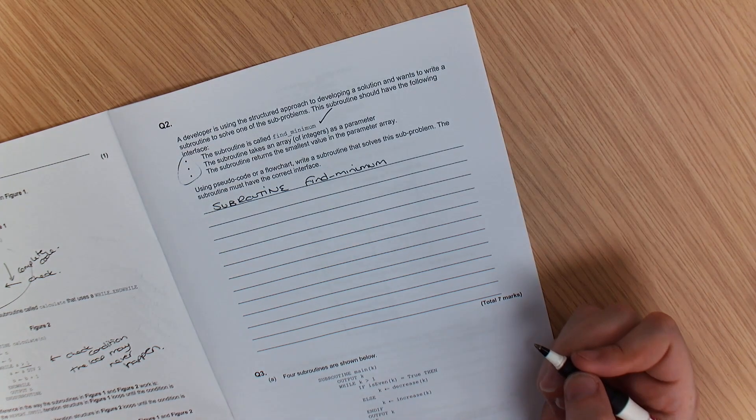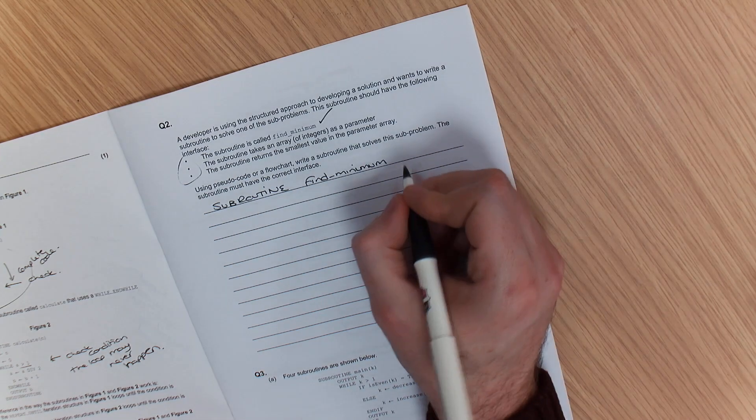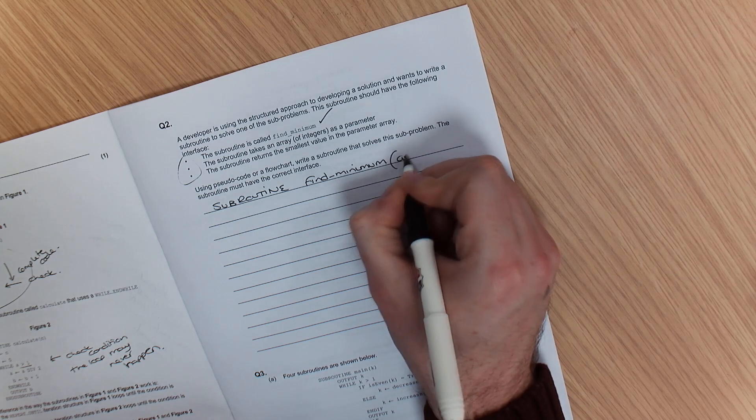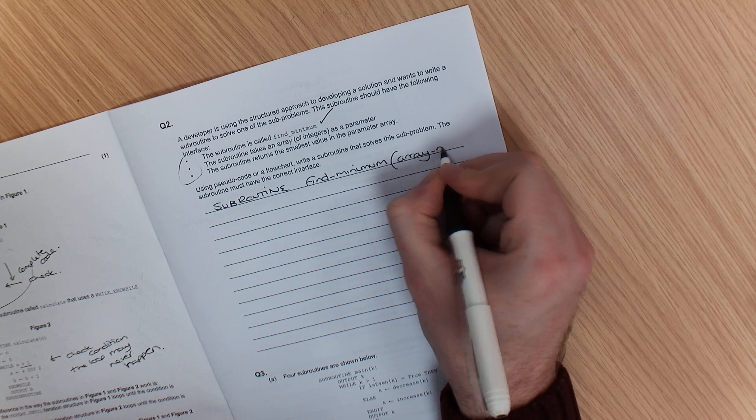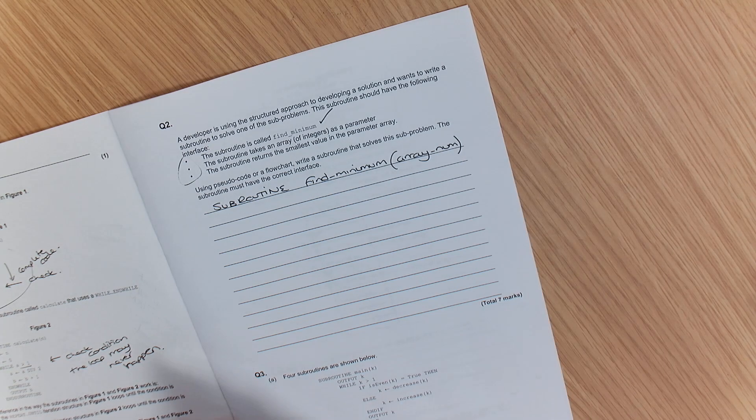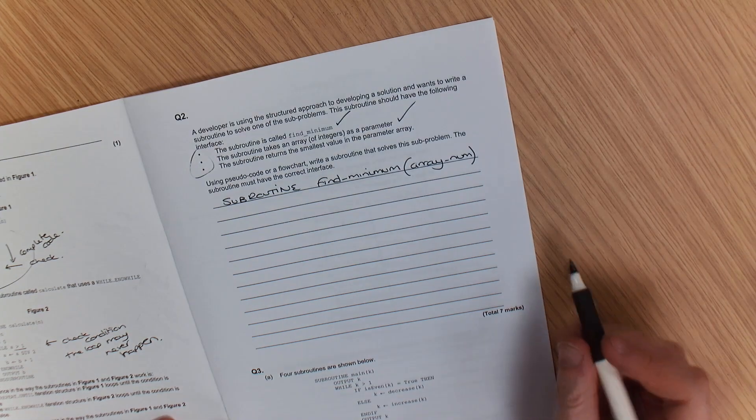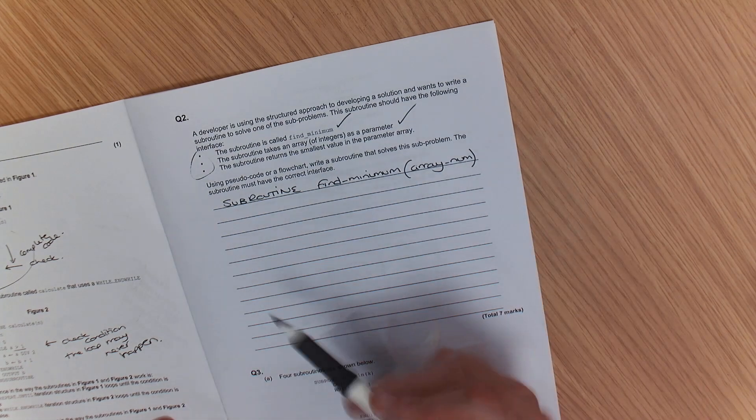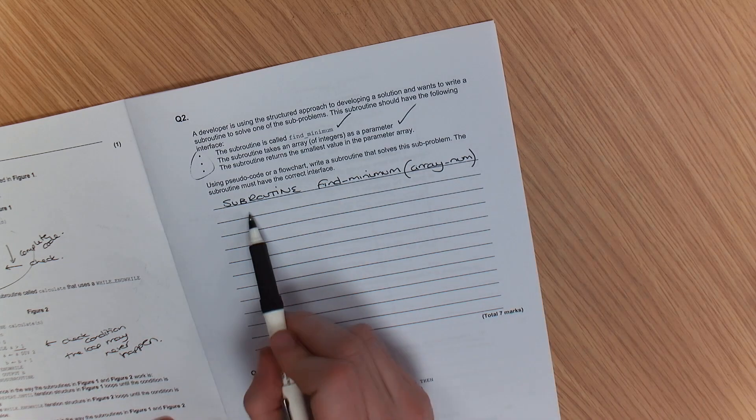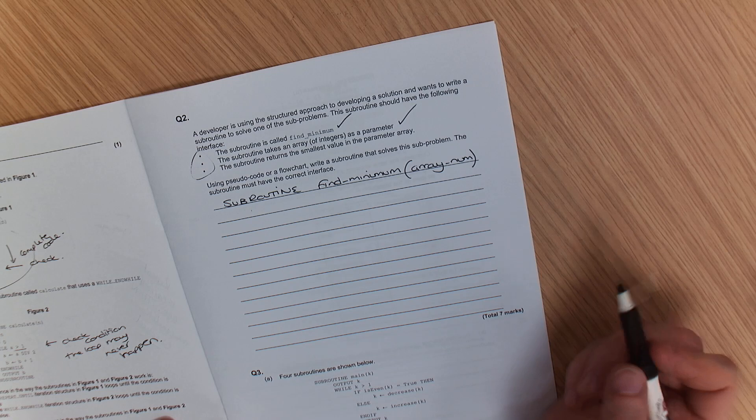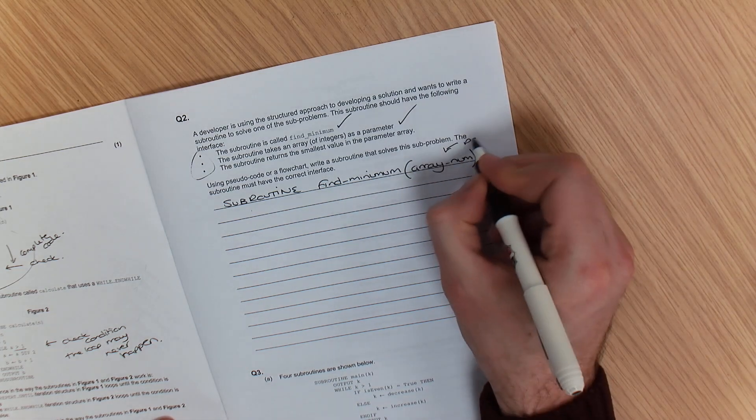Now if you aren't very strong at programming, one thing that you can do to improve your marks is actually pay attention to the bullet points that they give you. A developer is using a structured approach and developing a solution, and they want to write a subroutine to solve one of the subproblems. The subroutine should have the following. It should be called findminimum. Nice, easy one for you here. All you need to do is write the word subroutine, and this is not in Python. This is in pseudocode. Subroutine find underscore minimum. Minimum. Tick. I've got that mark.